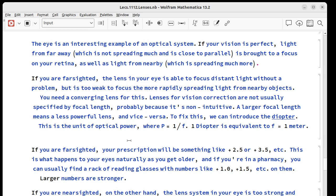Now, usually the prescription, if you happen to know your prescription and you wear glasses, they're never specified by focal length. And the reason is it's non-intuitive. A large focal length means a less powerful lens. A small focal length would mean a more powerful lens. The way they've gotten around this, the optometrists and ophthalmologists, they introduced something called the diopter. This is a unit of optical power and we define it as just one over F. So one diopter would be a focal length of one meter. If you're farsighted, let's say your prescription is something like plus 2.5. Farsighted is what happens to you naturally as you get older. If you're in a pharmacy, you can find a whole rack of reading glasses with these numbers, plus 1, plus 1.5, whatever. The larger numbers are stronger and they'll help bend that light to a focus on your retina.